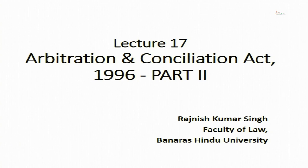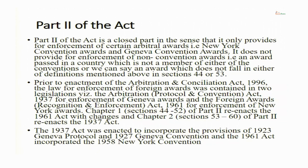I will devote the present lecture on Part 2 of the Arbitration Conciliation Act. Part 2 is for enforcement of certain foreign awards — it is a closed part in the sense that it only talks about enforcement of certain foreign awards. Those certain foreign awards are New York Convention Awards and Geneva Convention Awards. Part 2 does not concern itself with enforcement of non-convention awards — awards passed in a country which is neither a member of New York Convention nor Geneva Convention.